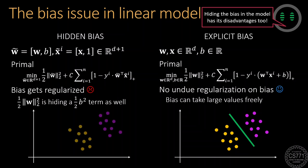The explicit bias formulation would let the bias take large magnitude values freely. However, the hidden bias formulation would discourage this and may lead to smaller margins or even misclassifications.